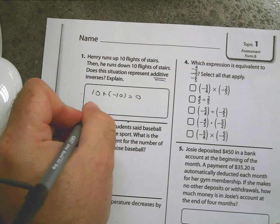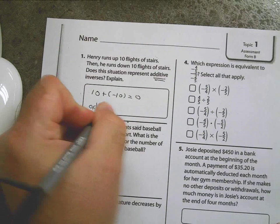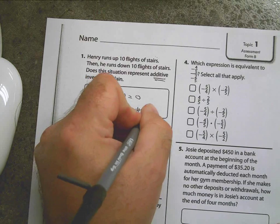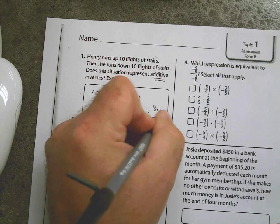This question should have been ten plus negative ten equals zero. And yes, adding opposites gives me a sum of zero.